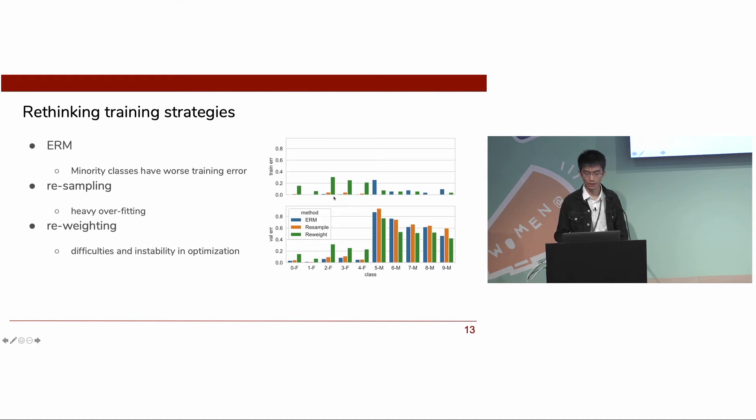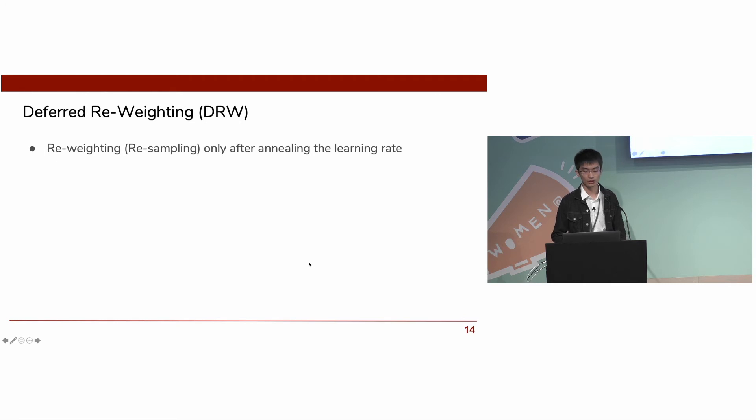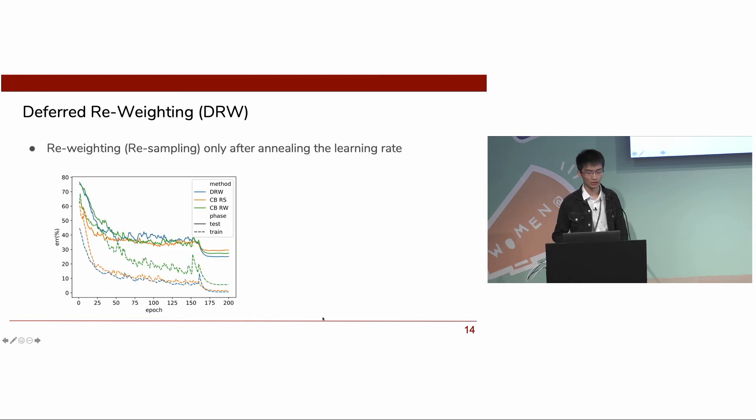It has difficulties and instability in optimization, as could be observed in the figure. The green bar is the reweighting, and we could see that it couldn't fit the frequent classes well. So in this work, we also propose an effective training strategy, which we name deferred reweighting. It's actually very simple. Basically, we apply reweighting only after an initial learning rate.